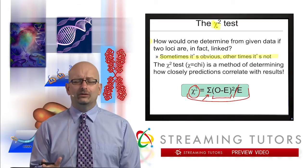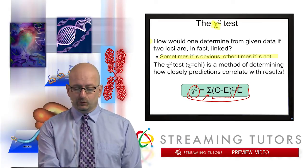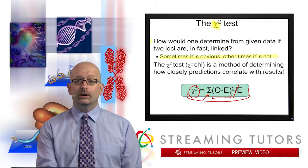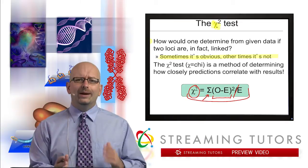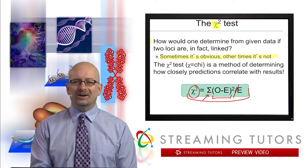So some people will make you memorize that chi-square equation, some will provide it for you. It's not that bad once you understand the concept. But it's sigma, parentheses, observed minus expected, end parentheses, squared, divided by E. When we actually do it, it should make more sense.